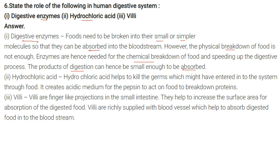Hydrochloric acid: it helps kill germs that might have entered through food, and it creates an acidic medium of pH 2 for pepsin to act on food and break down proteins. Villi are finger-like projections in the small intestine where actual absorption of food takes place. They increase the surface area for absorption, and are richly supplied with blood vessels which help absorb digested food into the bloodstream.